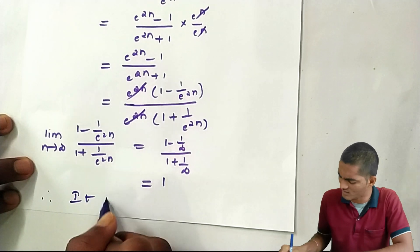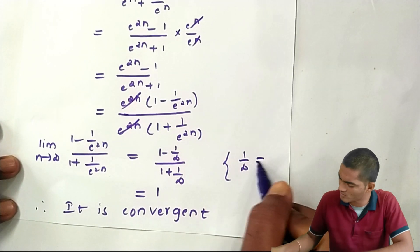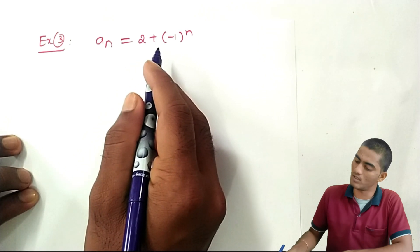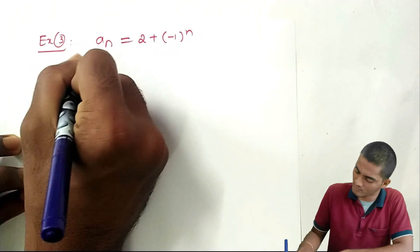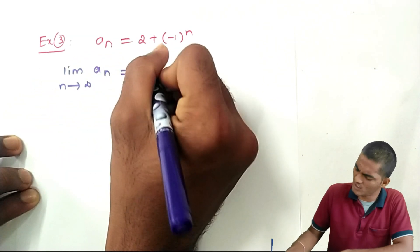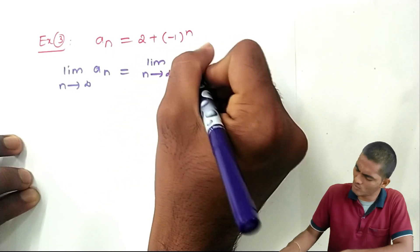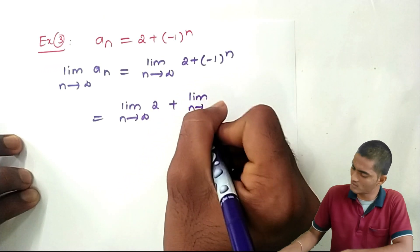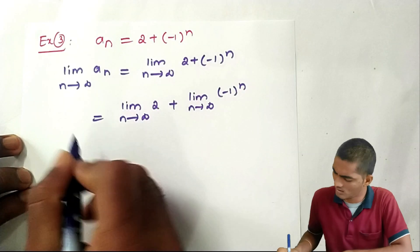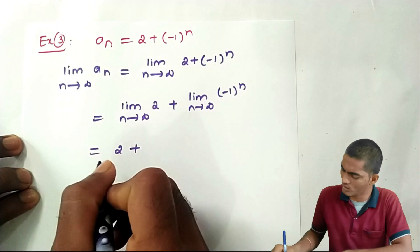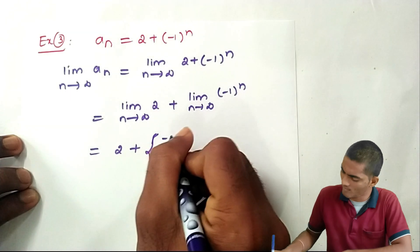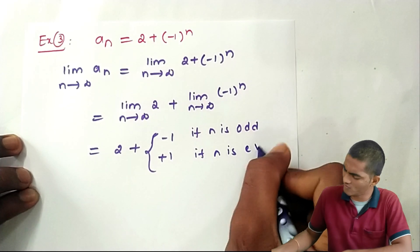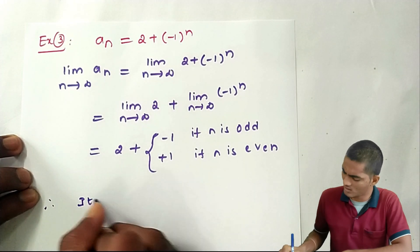Next, example 3: the nth term is a_n = 2 + (-1)^n. Applying the limit as n tends to infinity: limit of 2 + (-1)^n. The term (-1)^n equals -1 if n is odd, and +1 if n is even. Therefore the given sequence is oscillatory.